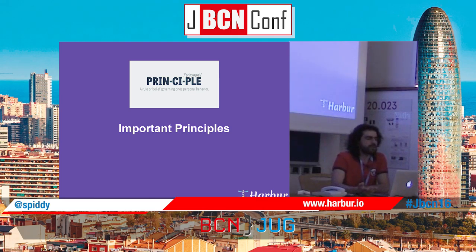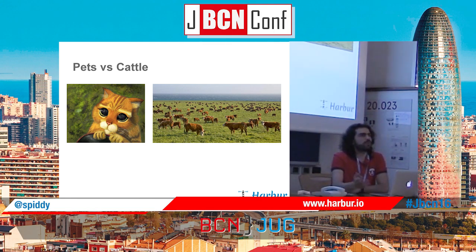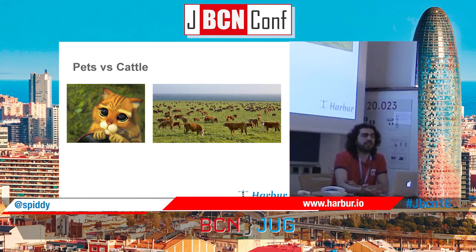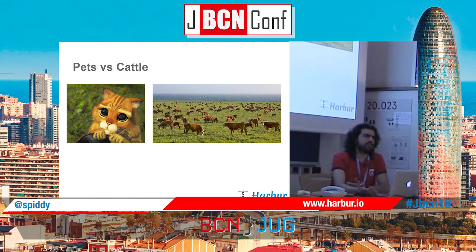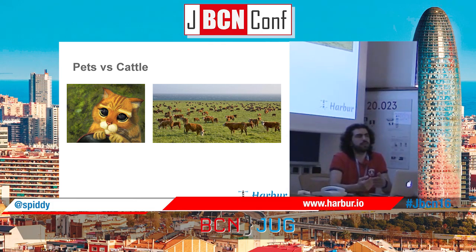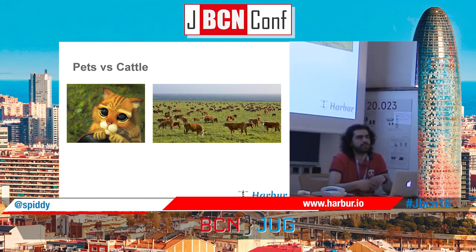Let's talk about some principles. First, the pets versus cattle principle. The difference is that pets are something you give a name: if something goes wrong with the pet, you take it to the doctor, see what's the problem, and make sure it will be okay. With cattle, if there is a problem, you give it an injection to see if that helps, and if it doesn't improve, you just buy another one and discard that one. We're applying this same approach to virtual machines and servers: your infrastructure should be consumable, scalable, and you shouldn't care about any one specific instance.